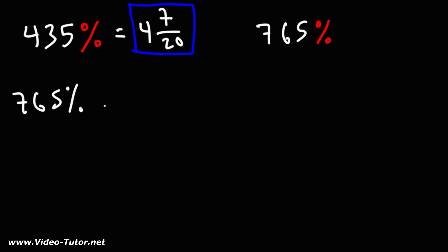765%. Let's convert that to a decimal number by dividing this number by 100%. So moving the decimal point two units to the left, we're going to get 7.65. Now, let's break this number into a whole number and the decimal. So this is 7 plus 0.65.